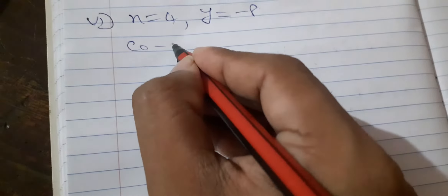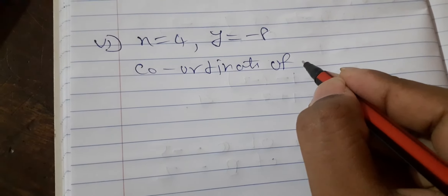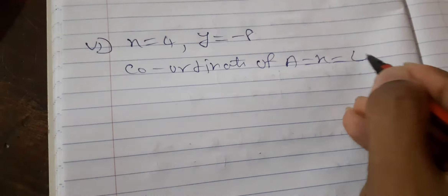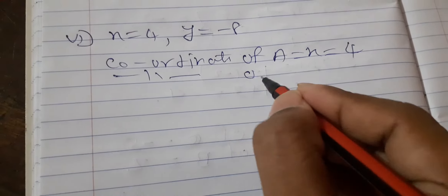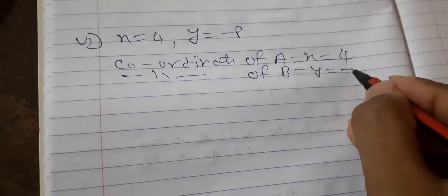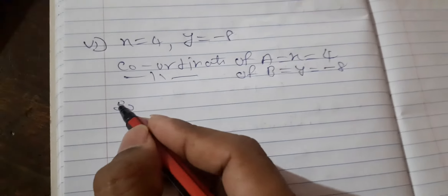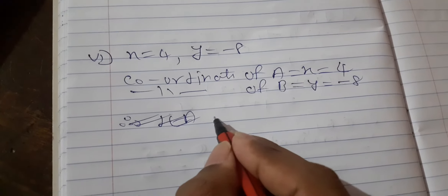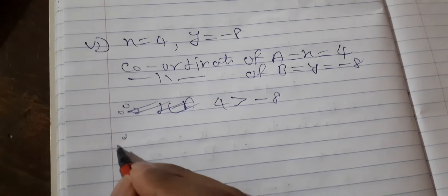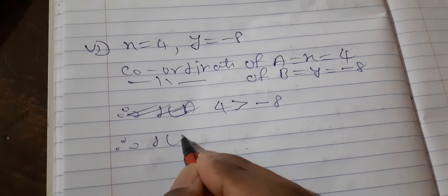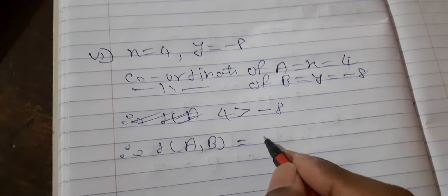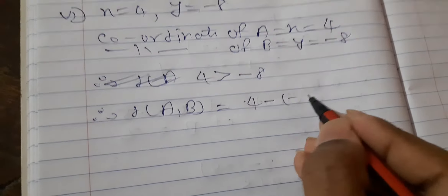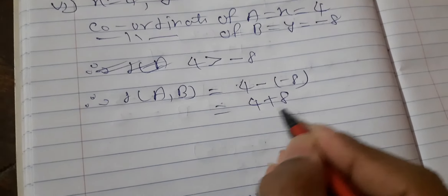Next question: Distance AB where coordinate of A is equal to X is equal to 4, and coordinate of B is equal to Y is equal to minus 8. Therefore, distance AB is equal to 4 plus 8, which is equal to 12.